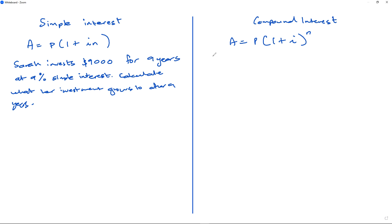And on that same token, we have exactly the same thing, but Sarah invests $9,000 for 9 years at 9% compound interest. Calculate growth of investment during this period.